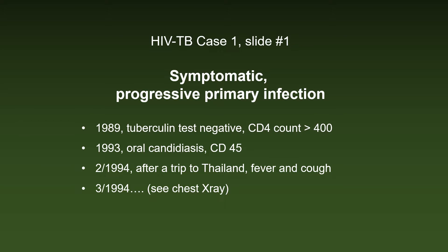Our first patient was a young woman who came to our attention in 1989. Her tuberculin skin test was negative and she was not immunosuppressed, with a CD4 count above 400. However, four years later she had oral candidiasis and the CD4 count had decreased to 45. In February 1994, after a trip to Thailand, she had fever and cough.